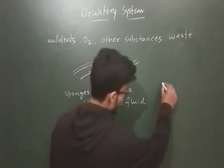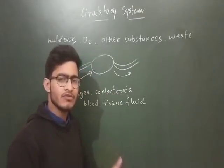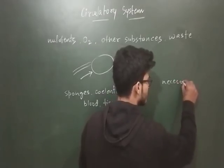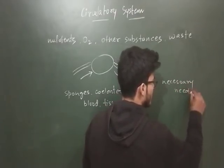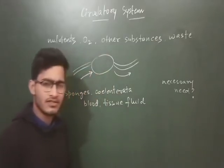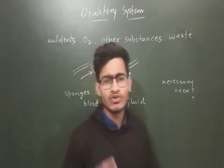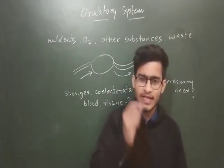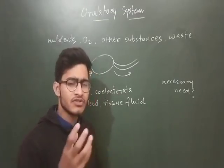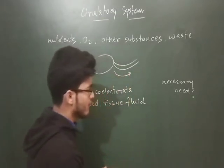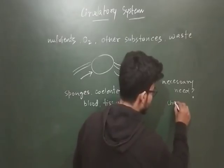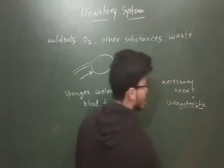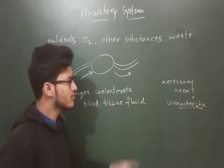When we discuss the circulatory system, it becomes very important to understand why the circulatory system is necessary — what is the need of a circulatory system. When we talk about the most characteristic feature of a living organism, cellular organization, or the presence of cells, is a peculiar and characteristic feature of living organisms. If an organism is living, it must have cells.